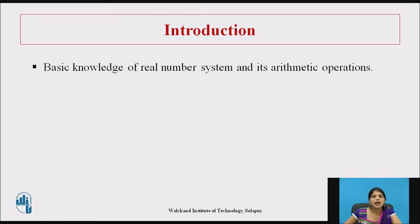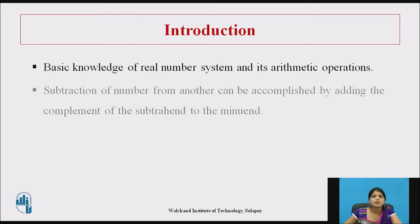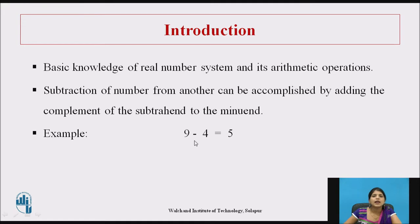Students must have basic knowledge of the real number system — that includes integers, real numbers, and arithmetic operations. Subtraction of one number from another can be accomplished by adding the complement of the subtrahend to the minuend. For example, 9 minus 4 equals 5. Here, 4 is the subtrahend — the number you want to subtract — and 9 is the minuend — the number from which you subtract. The result, 5, is the difference.